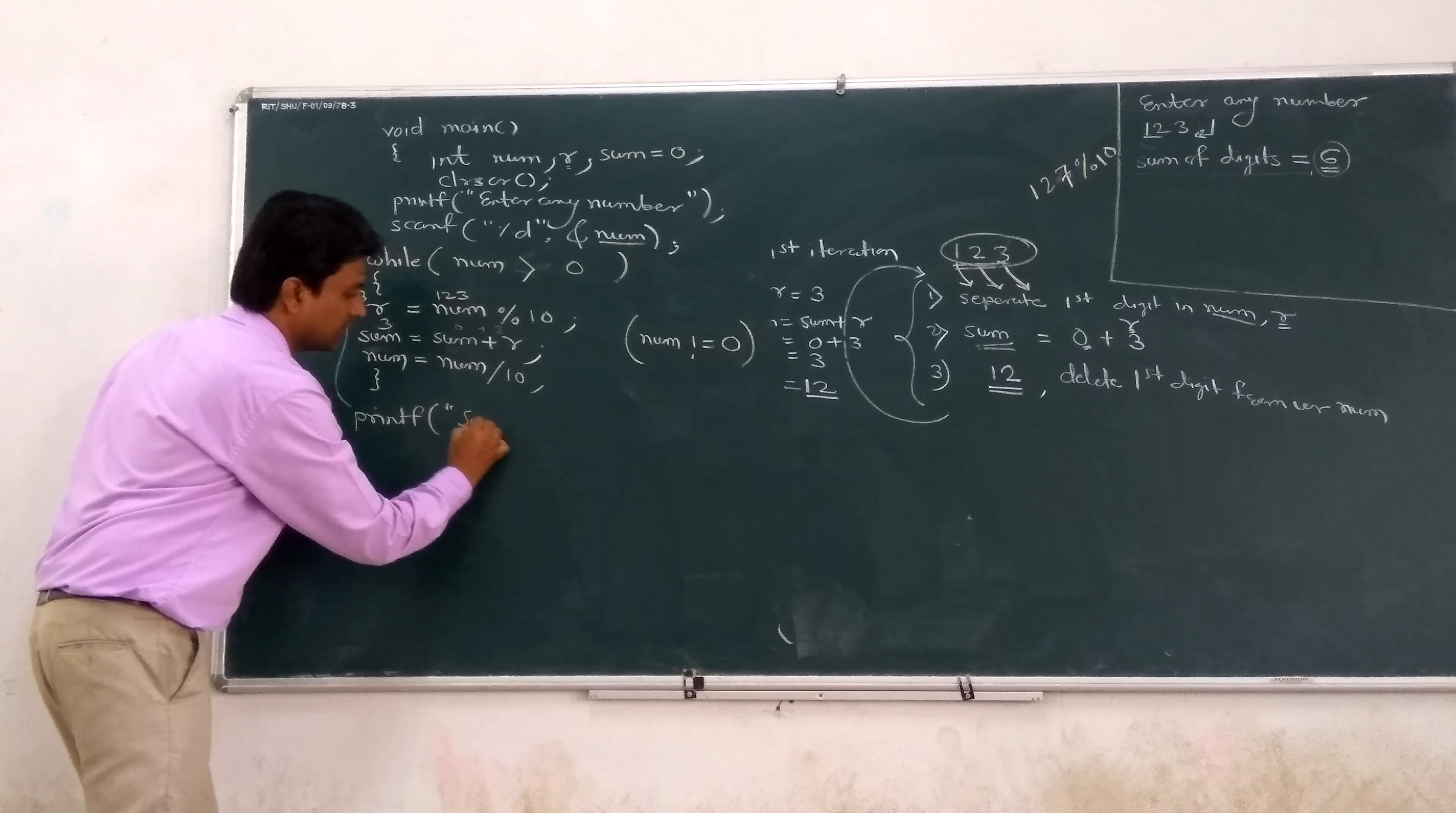There are all the statements or variables - three variables. How many bytes reserved? Total six on which memory? Stack, because all are local. Num is there, variable r is there, and sum is there.